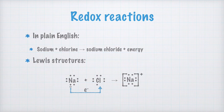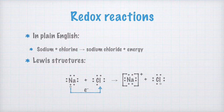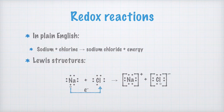What about the chlorine atom? It has picked up an electron, so it also has 8 electrons in its outermost shell. Since it has received an extra negative charge, the chloride ion — as it's now called — becomes negatively charged, written with a minus sign.